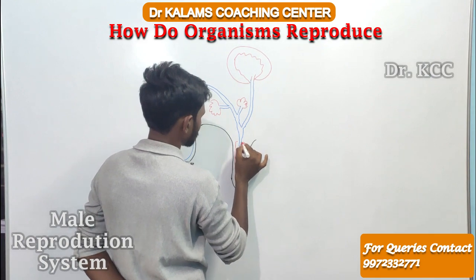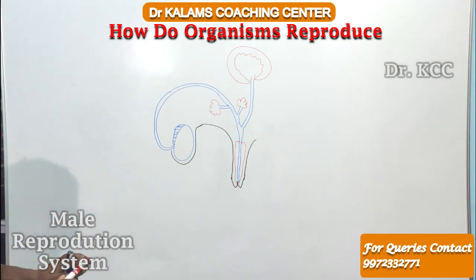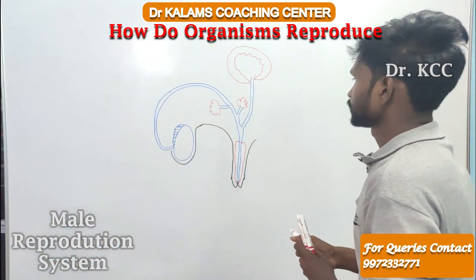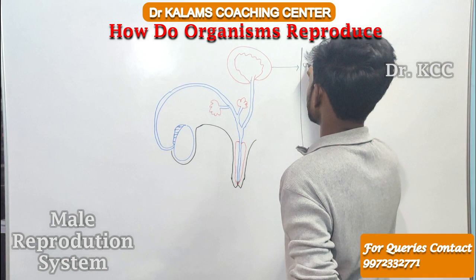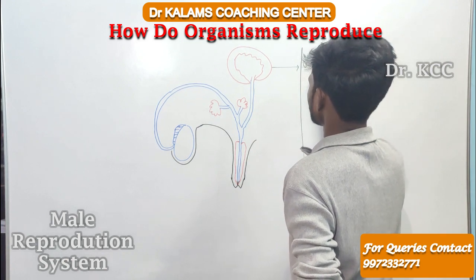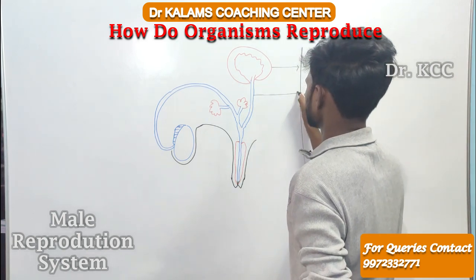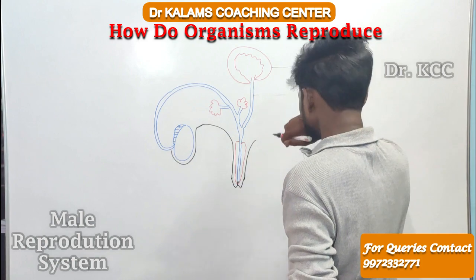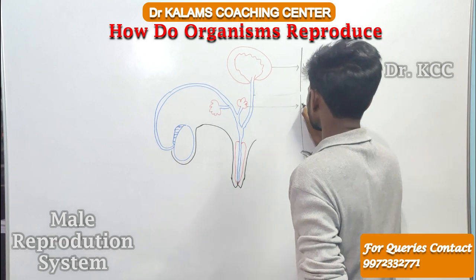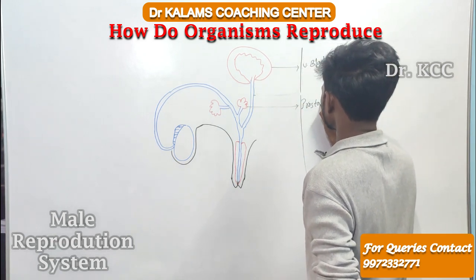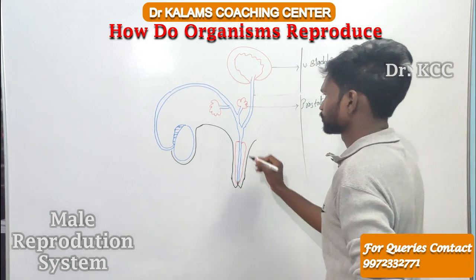That is more than enough for the male reproductive system. Now we get to labeling — we have marked all the essential things. This is your urinary bladder, which stores urine temporarily. This is your prostate gland. For this diagram also, if anyone needs explanation, please do comment.